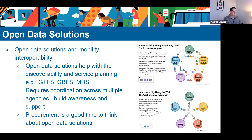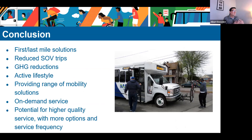In conclusion, both microtransit and micromobility can serve multiple purposes and are really context-specific. First-last mile is often a common use for these modes, but it's really based on understanding the mobility needs of your community and planning accordingly. Benefits include reduced single-occupancy vehicle trips, which can help reduce a city's carbon footprint, promoting a more active lifestyle. The on-demand technology of both modes has the potential for higher-quality service that can help save money.